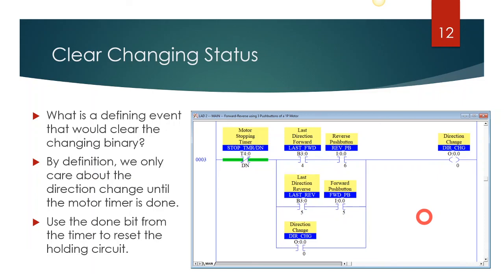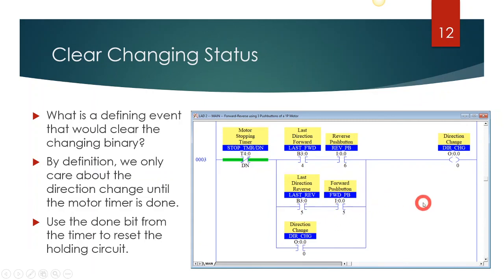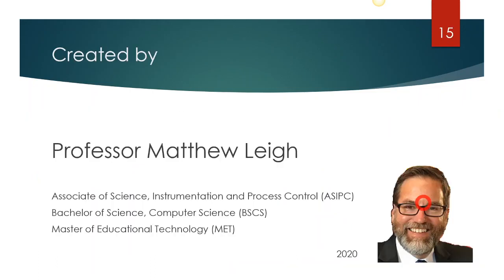A couple of things you'll need to add to your program: first, write the code for remembering the last reverse direction; and second, use the direction-change bit to disable either your forward or reverse direction from being able to change during a direction change. This lesson was based on three push buttons — if you're using a selector switch, just substitute the selector switch addresses instead of the push button addresses. That's the difference between this job and the next job.